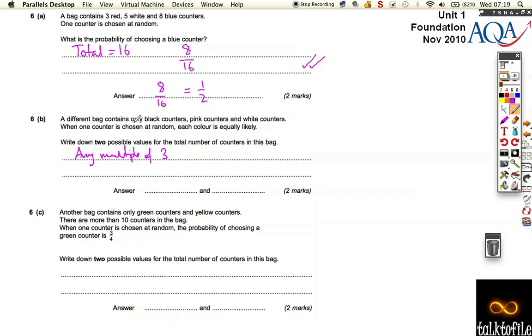A different bag contains only black counters, pink counters, and white counters. So when a counter is chosen at random, each colour is equally likely. So it means that there's going to be the same number of every counter. So that means that you could use any number that multiplies by three. Because for every black counter, you need a pink and a white as well.